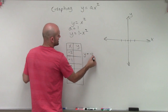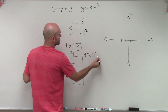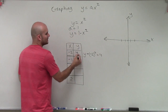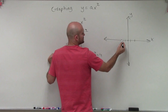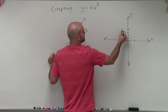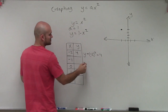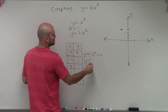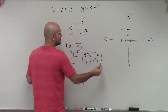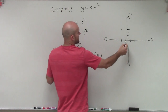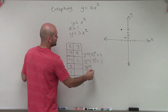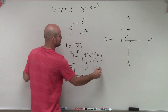Starting with x equals negative 2: y equals negative 2 squared, which equals 4. So the y coordinate is 4 — I go over to negative 2, then up 4. For x equals negative 1: y equals negative 1 squared. Negative 1 times negative 1 is positive 1, so I go over negative 1, up 1. Then plugging in 0: y equals 0 squared, which equals 0.